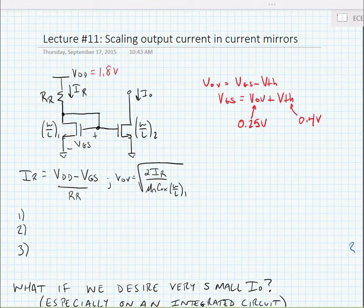So we know for this current mirror, we can say that the reference current is equal to the supply voltage VDD minus VGS for the NMOS one device divided by the reference resistance.